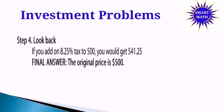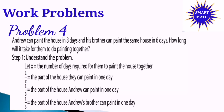Step 4: Look back. If you add an 8.25% tax to $500, you will get $541.25. So the final answer — the original price — is $500. Problem number 4: Work Problem. Andy can paint the house in 8 days and his brother can paint the same house in 6 days. How long will it take for them to do the painting together? Step 1: Understand the problem. Let X equal the number of days required for them to paint the house together.